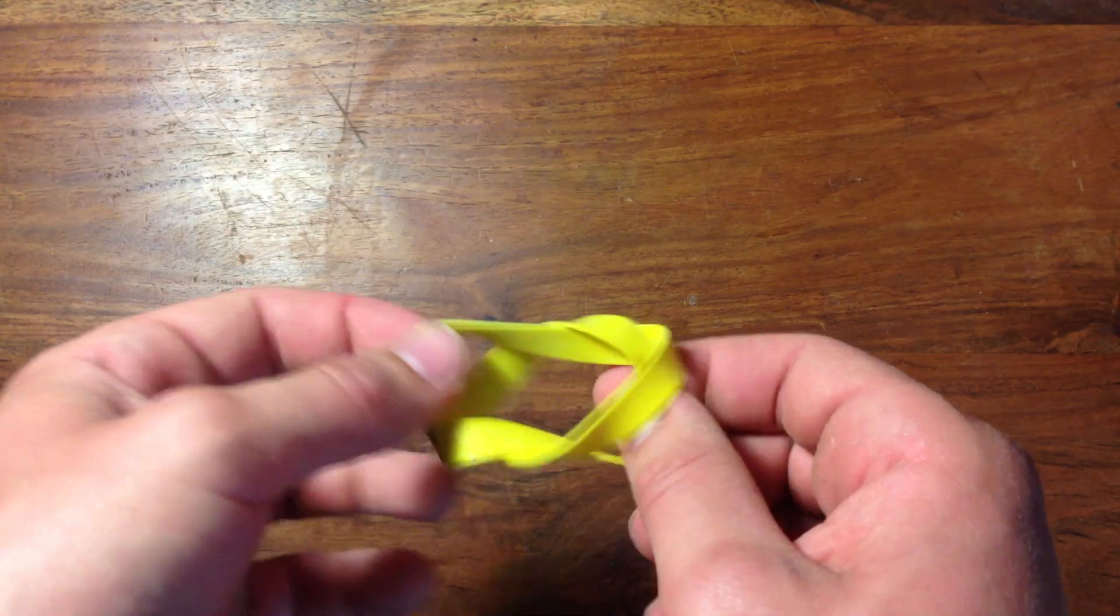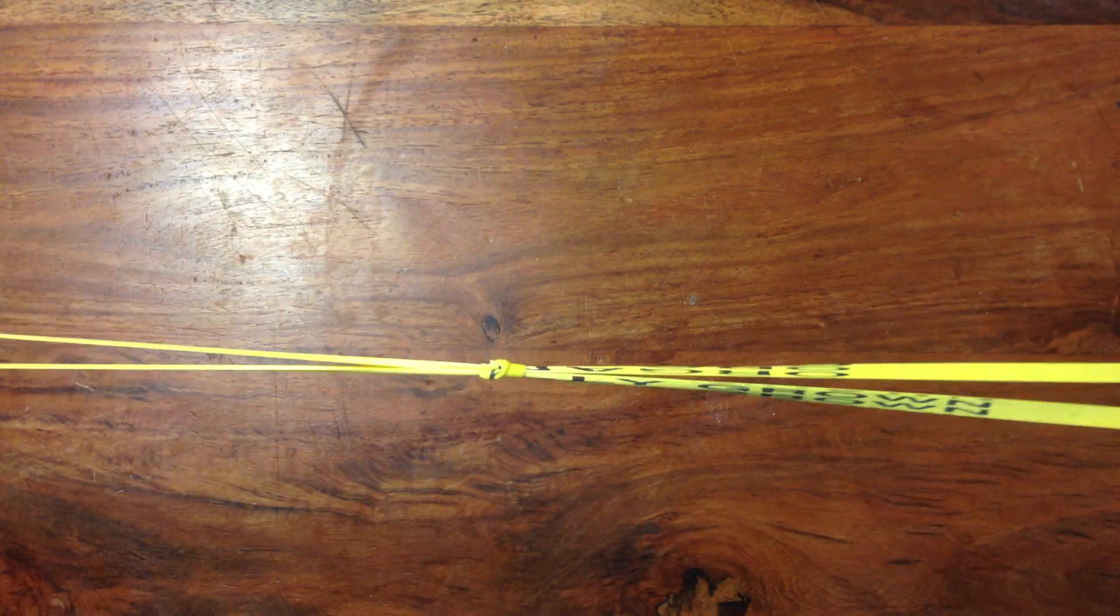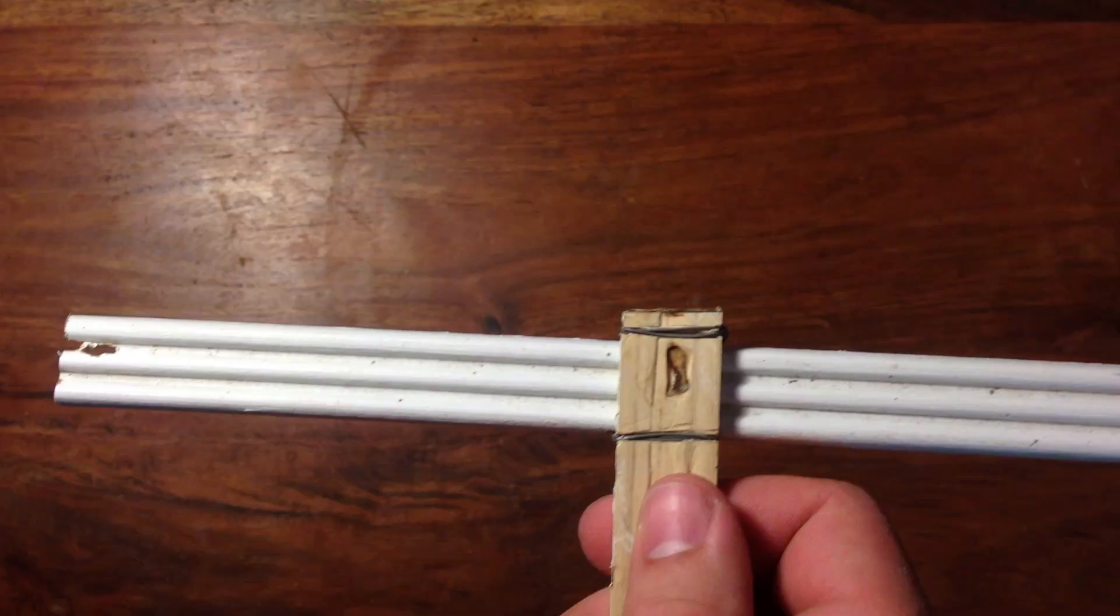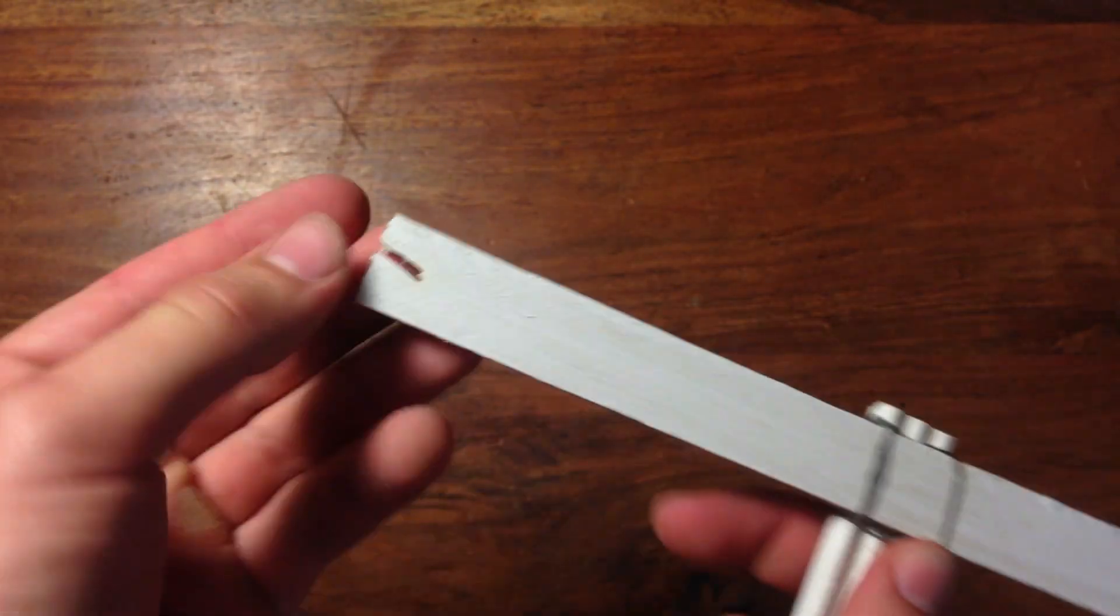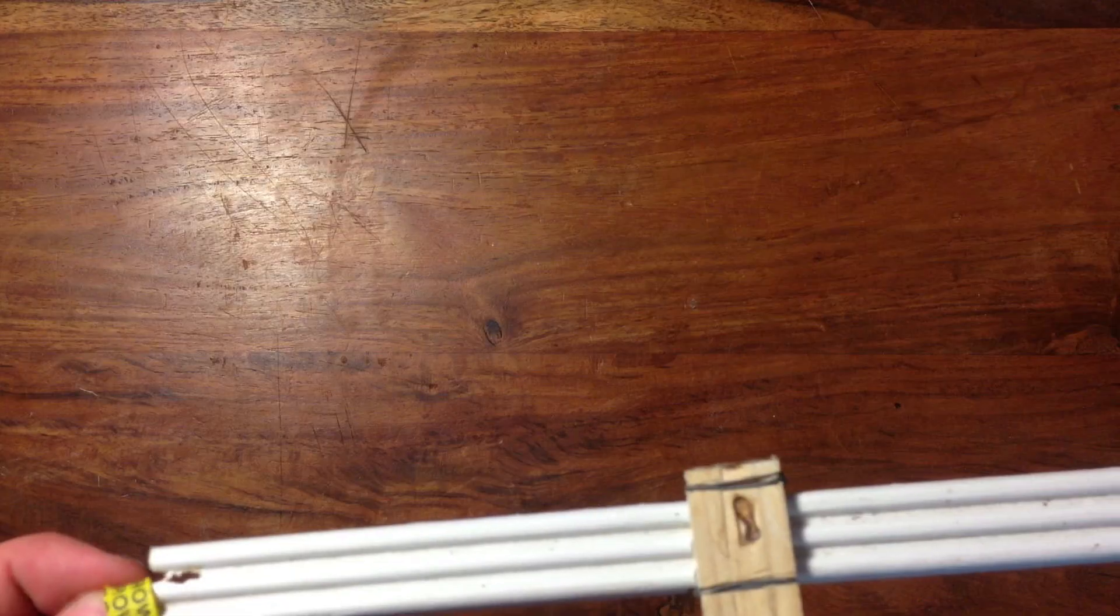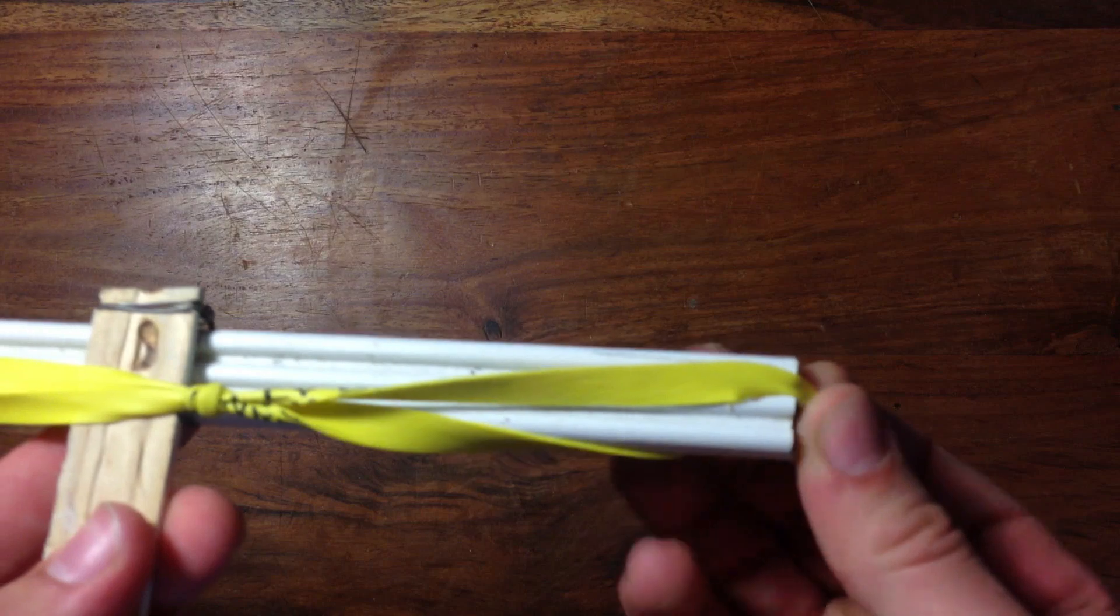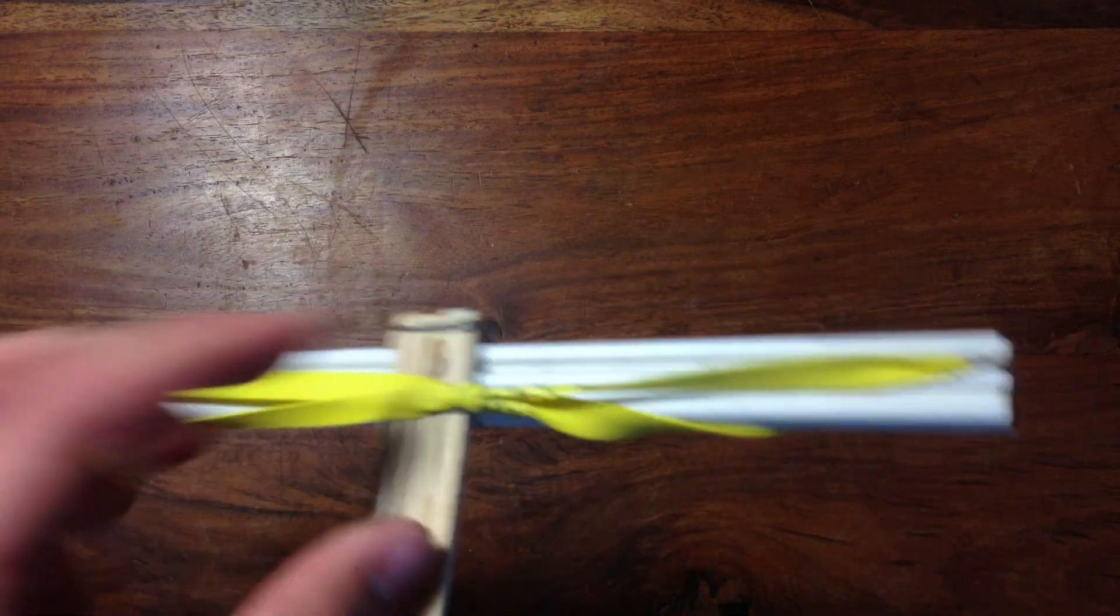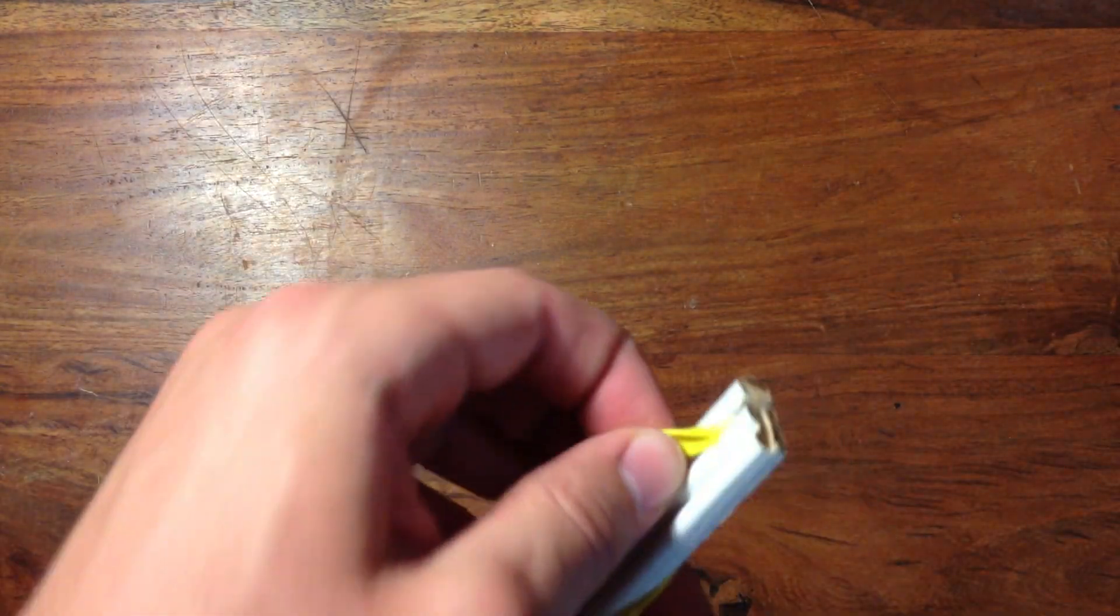Now grab two rubber bands and tie them together like this. Then take the piece of wood and cut two notches on either end, big enough for the rubber band to fit into. Now stretch the rubber band and run it through the grooves. It also might be a good idea to sand the edges so the rubber bands don't snap.